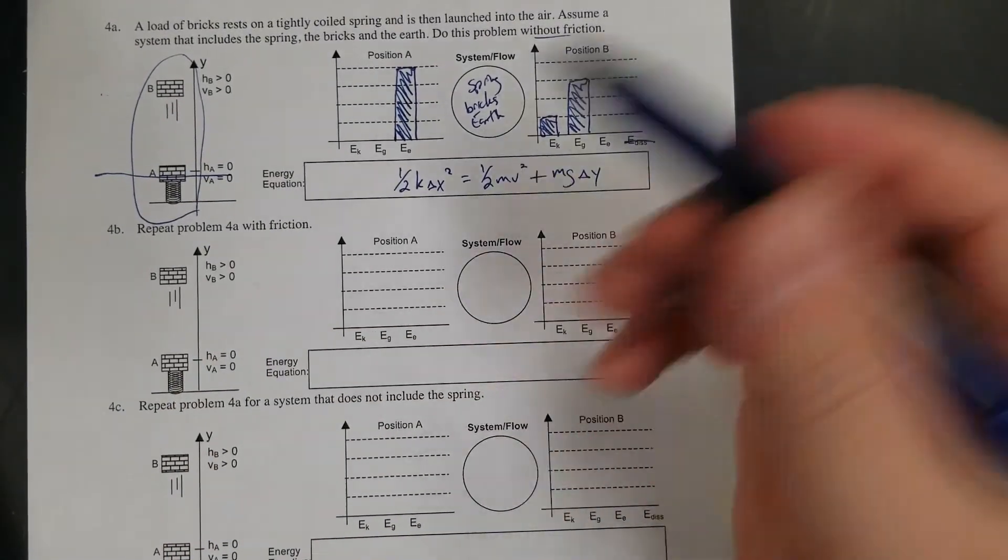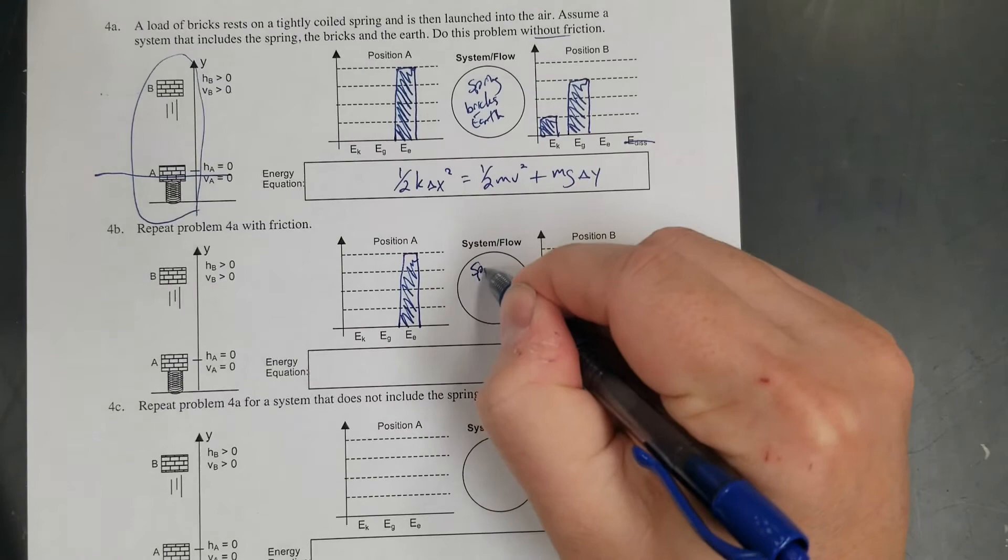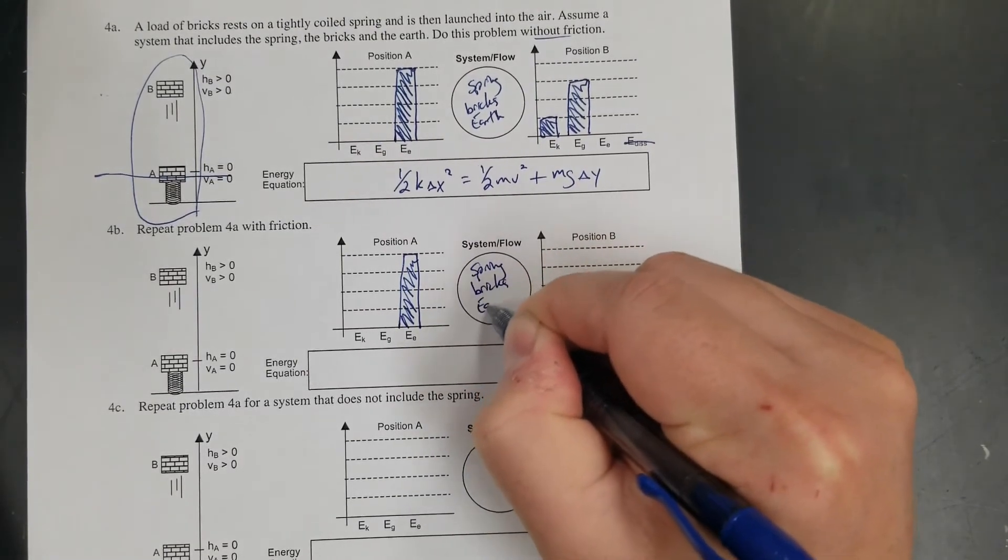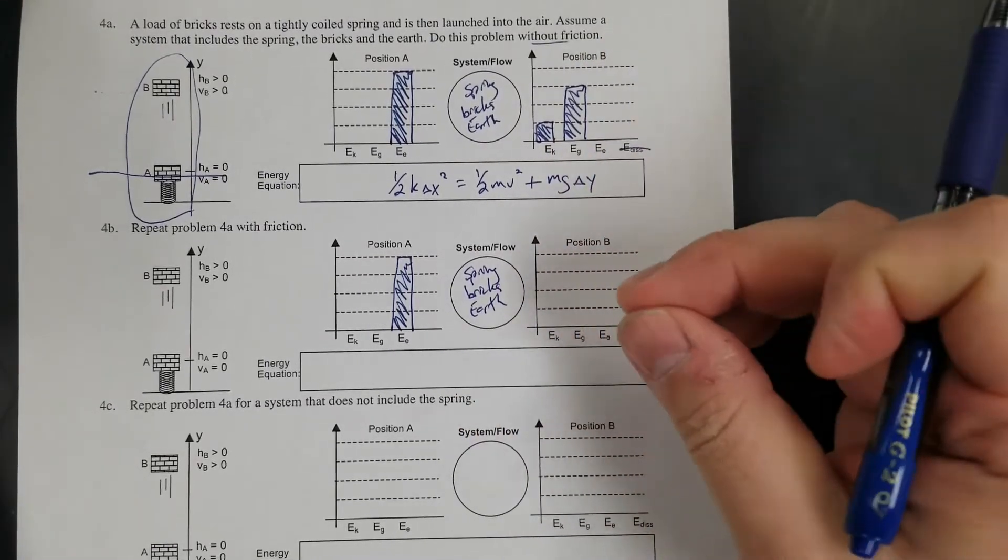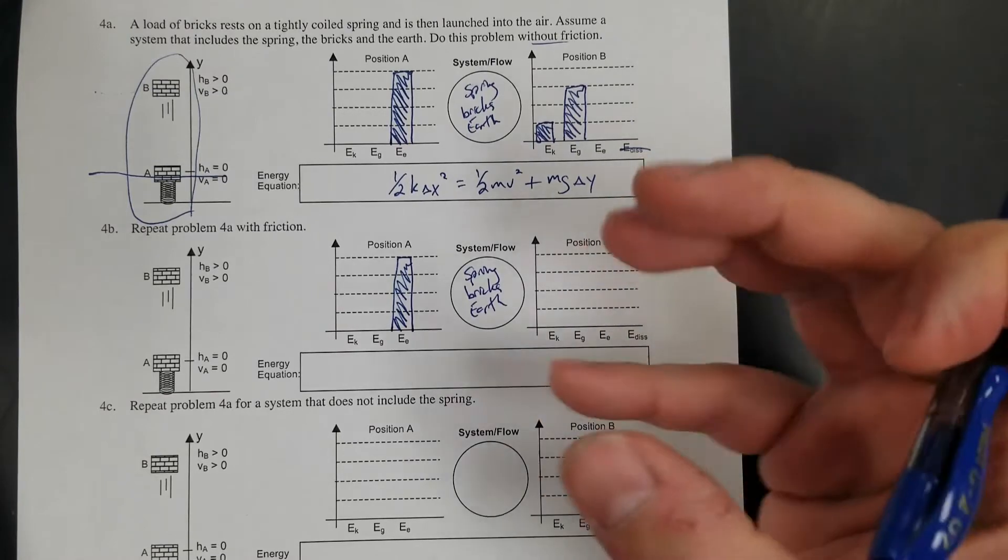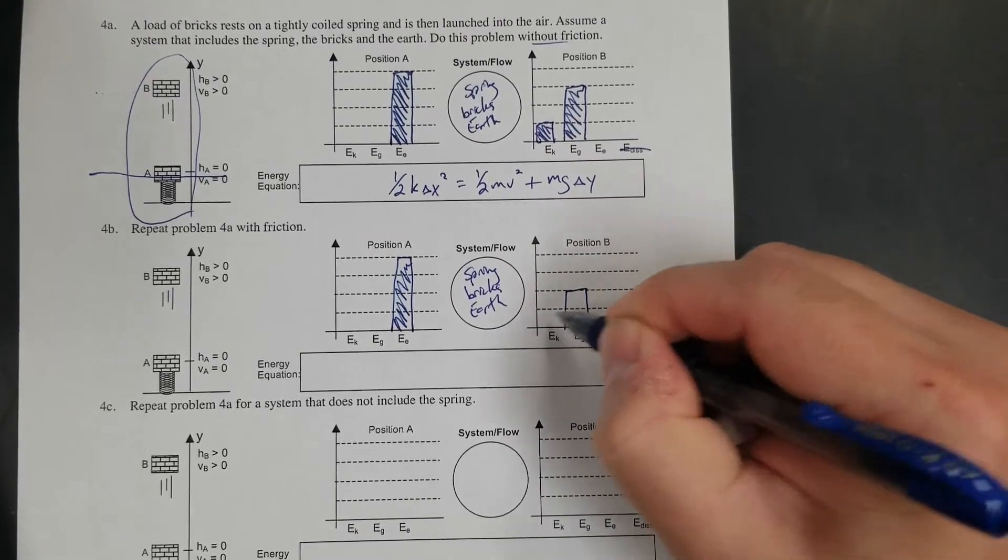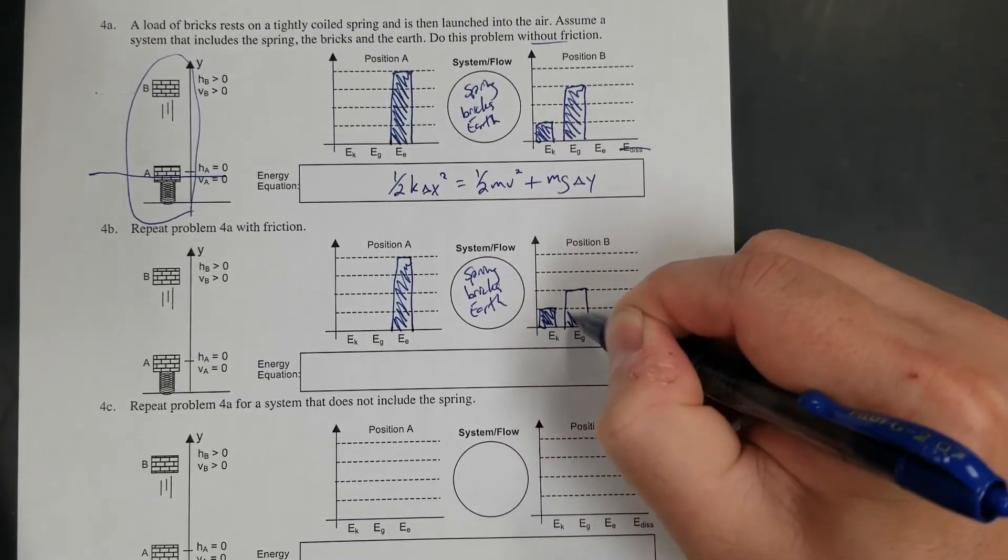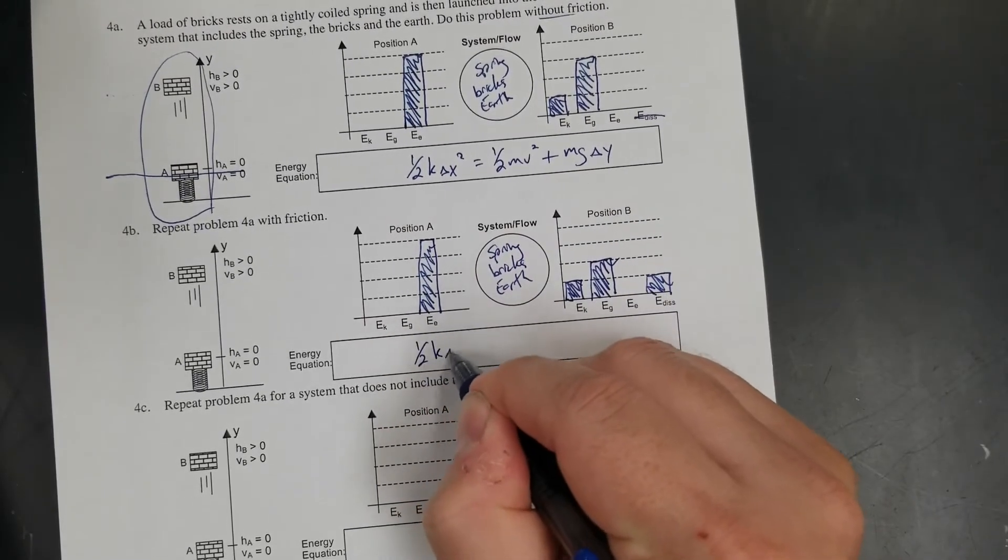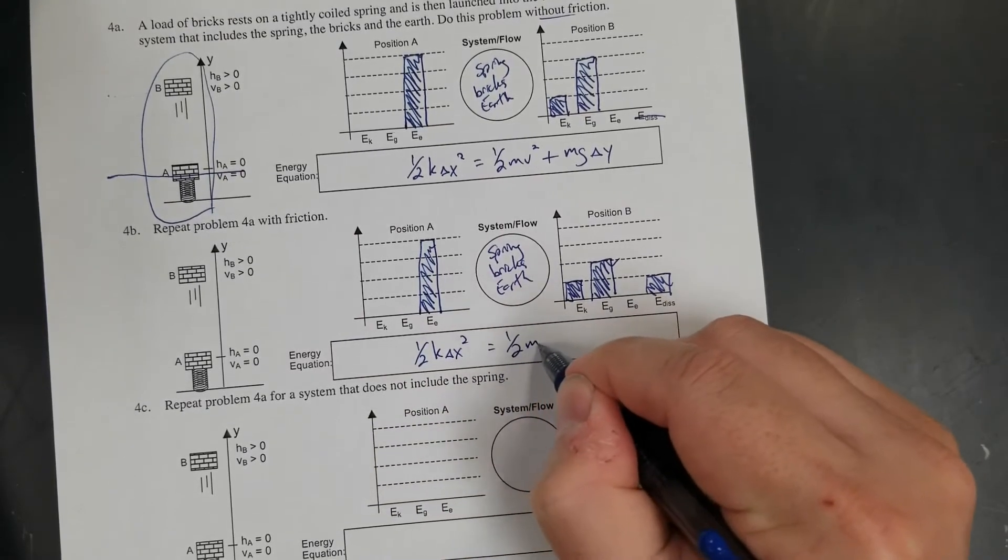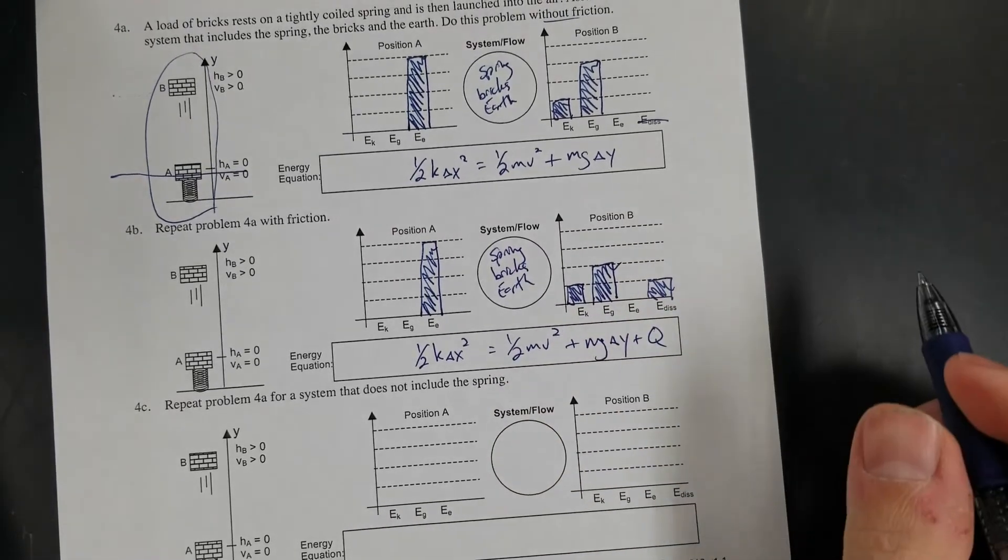Repeat it with friction. I'll do the same thing. Spring, bricks, earth. Now there's friction. That spring, when it lets go, it's going to produce some thermal energy because the molecules are moving around in the spring. I'll take that out of the gravitational. So kinetic, gravitational, and I've got to have a block of heat. So one-half kx squared equals one-half mv squared plus mg delta y plus q.